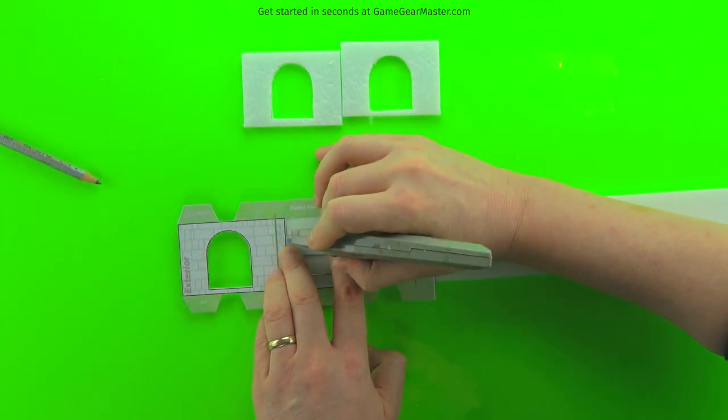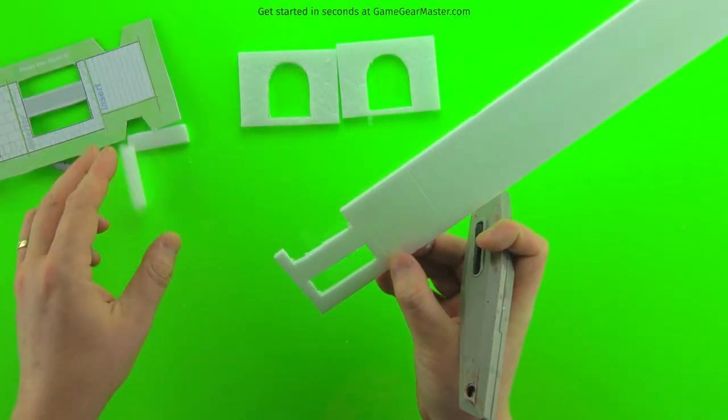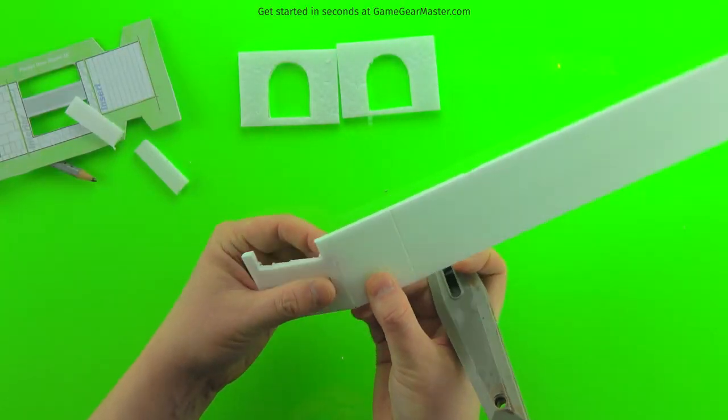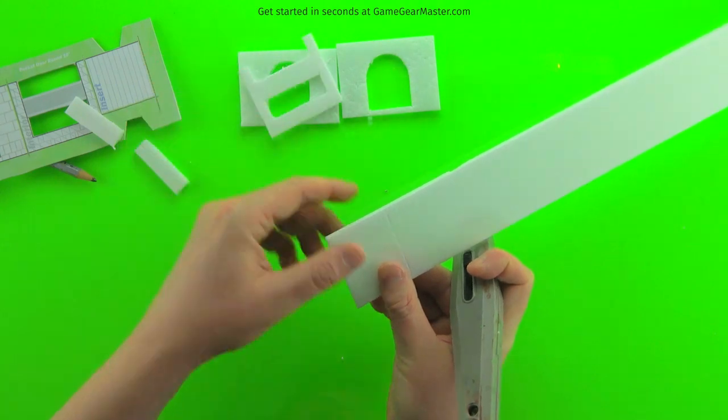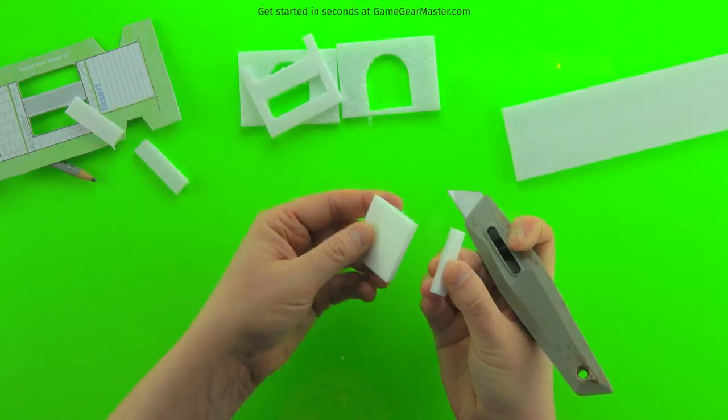And then we'll gently break apart the separate sections at the score lines. Just make sure for that interior pocket piece there, it's got some pretty thin arms, so make sure that you support them when you snap them apart.